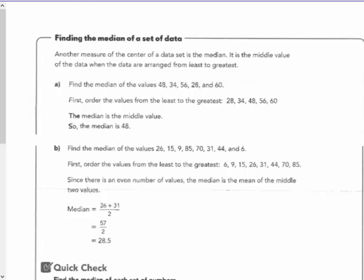Find the median of the values 48, 34, 56, 28, and 60. First, order the values from least to greatest. Okay, 28, 34, 48, 56, and 60. The median is the middle value. Some people like to cross off from either end.